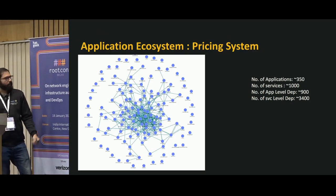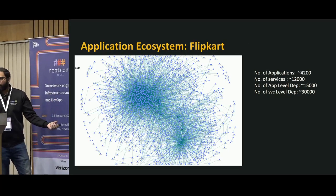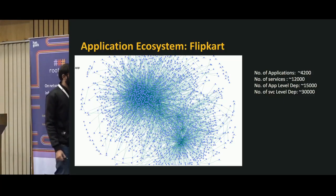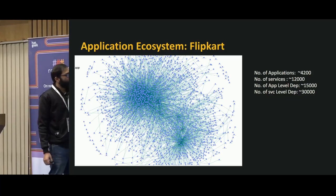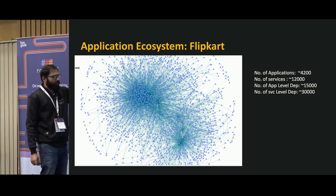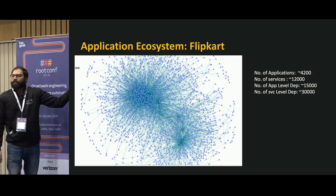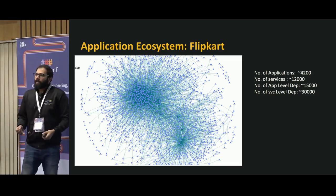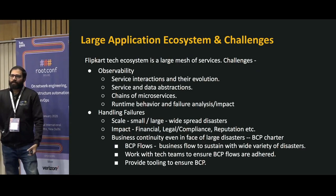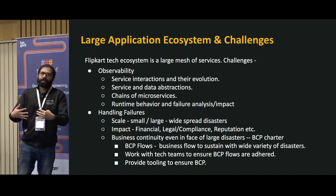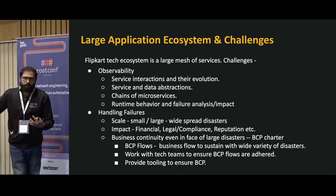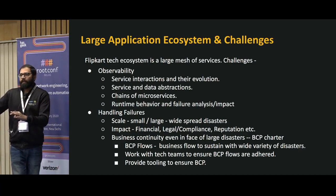Again, for the pricing system this is the app-level view. And this is how it looks for the entire Flipkart — the app-level view, higher level. If you look closely, there are two clusters formed in this entire mesh, representing two sets of data centers. Flipkart has two data centers. Once one data center goes down, we have to use the other to make sure services are up and running and able to serve critical business flows in case of a disaster.